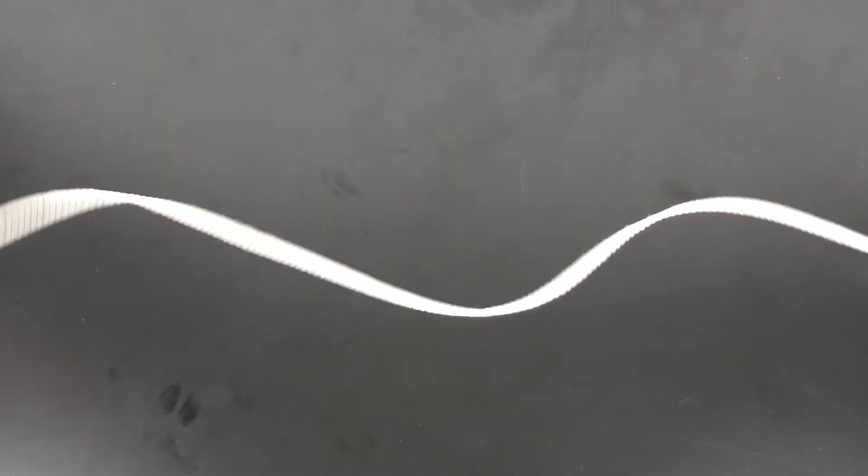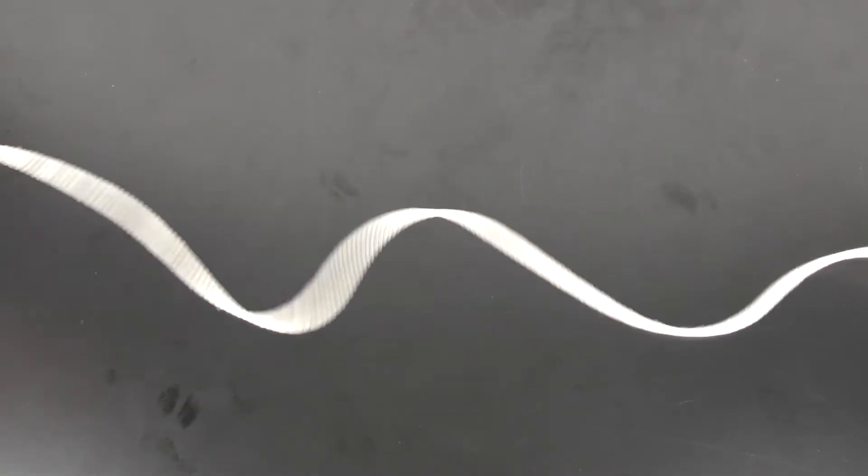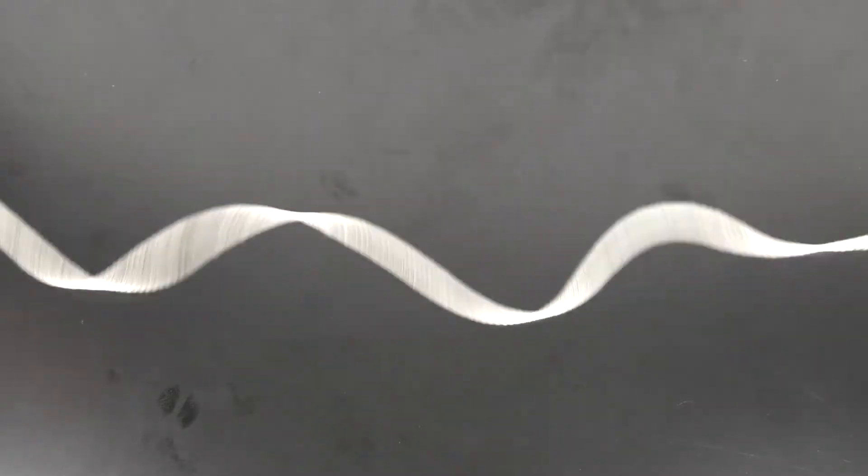The cotton rope can be used to demonstrate transverse waves, but you also have the ability to demonstrate more complicated waves such as a torsional wave, which is a spiral twisting motion.